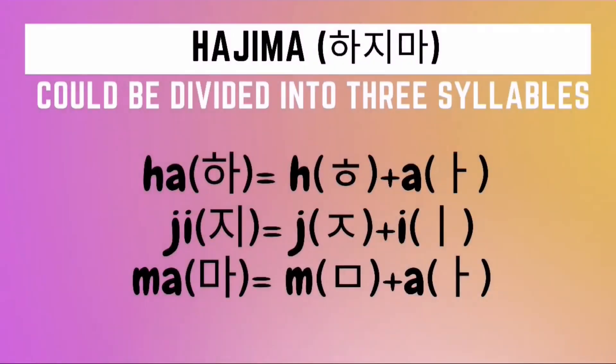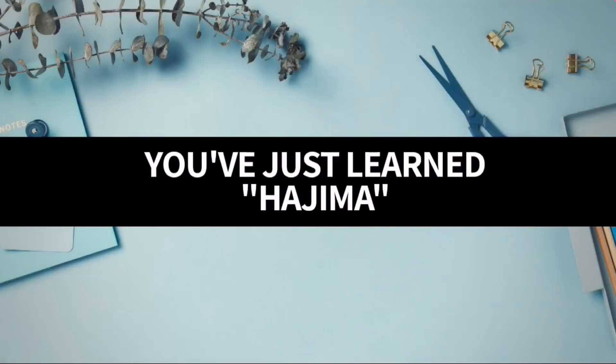How do we spell Hajima in Hangul? Let's start with the first syllable. To write Ha, we need to draw a Hieut character followed by an A character. For the second syllable Ji, we need to draw a Jieut character followed by an I character. For the third syllable Ma, we need to draw a Mieum character followed by an A character. We combine the three syllables to form the Hangul of Hajima. And with that, you've just learned Hajima.